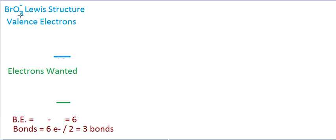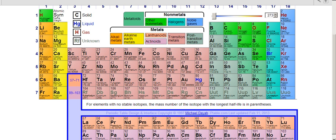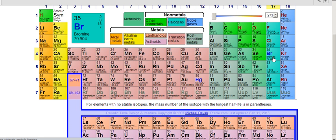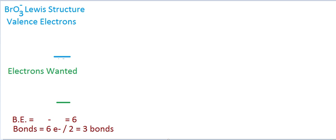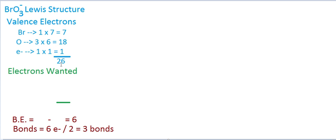This formula has one bromine, three oxygens, and a minus charge. Each of these is going to contribute electrons to the valence bonding and non-bonding electrons. Looking at the periodic table, bromine is in the seventh column — it has seven valence electrons — and oxygen is in the sixth column with six valence electrons. So we have seven electrons from bromine, 18 from three oxygens, and one extra electron for the minus charge, giving 26 valence electrons total.